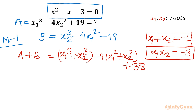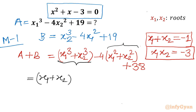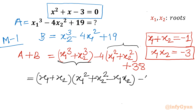Now I will apply algebraic formulas. For x1³ + x2³ I apply the a³ + b³ identity, and for the square terms I write in terms of a perfect square. So: (x1 + x2) × [x1² + x2² - x1x2], then minus 4(x1² + x2²) + 38.